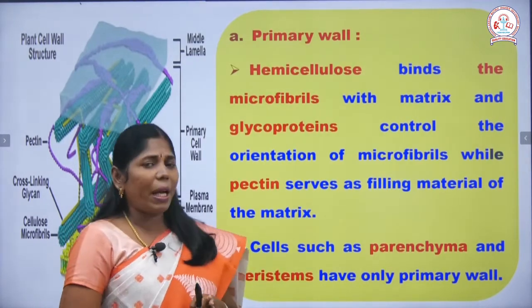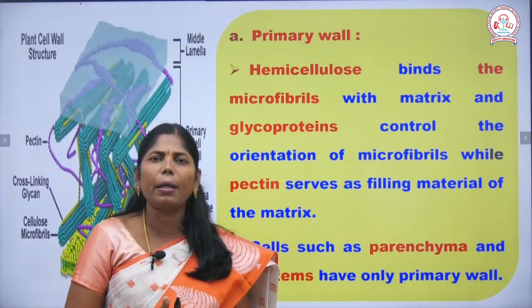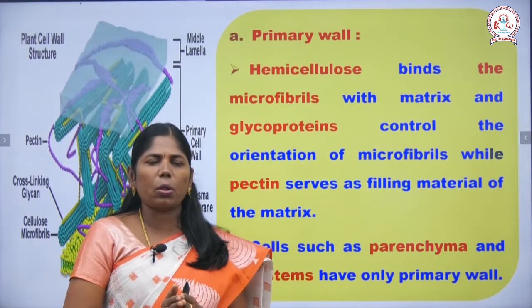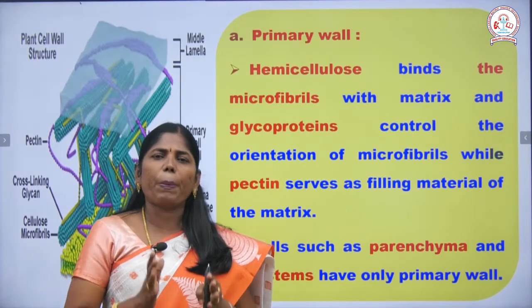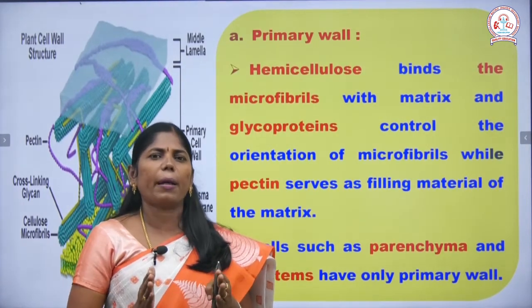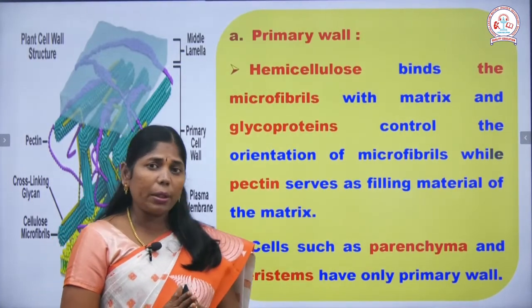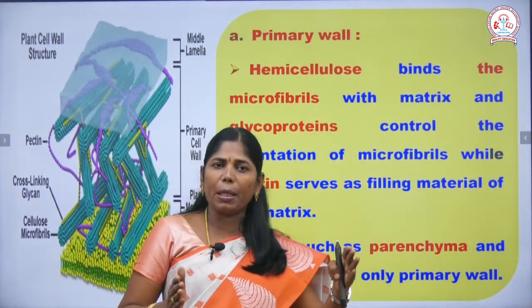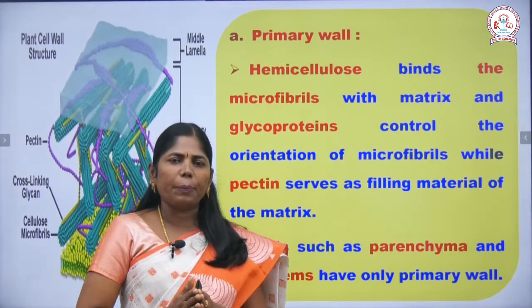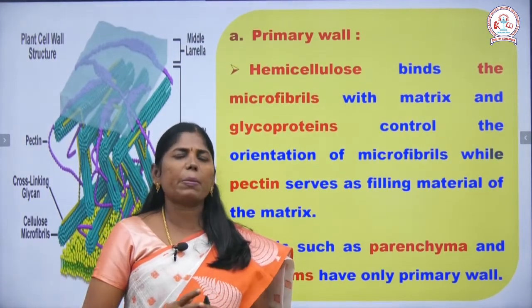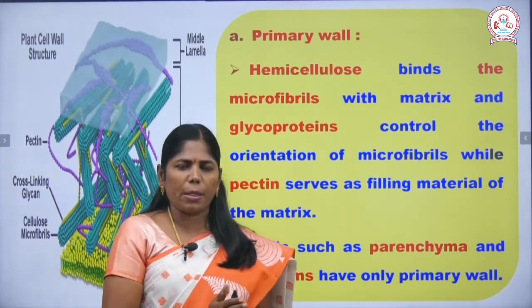The primary cell wall is present in parenchyma and meristematic tissues. Parenchyma cells are living cells, and almost all parts of the plant body are made up of parenchyma cells. Tissues are divided into two types: meristematic regions and permanent tissues.